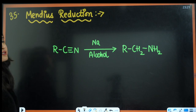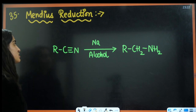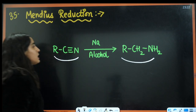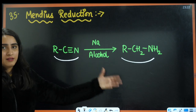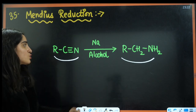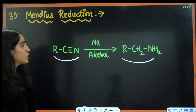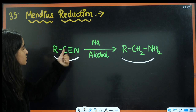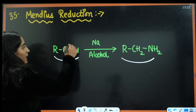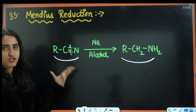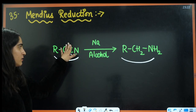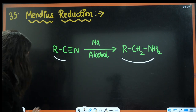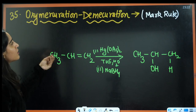Next is Mendius reduction. Here a cyanide is converted into an amine — specifically 1° amine with one more carbon. Na in alcohol is used here, the triple bond breaks and H₂ is added. A very simple and expected reaction.